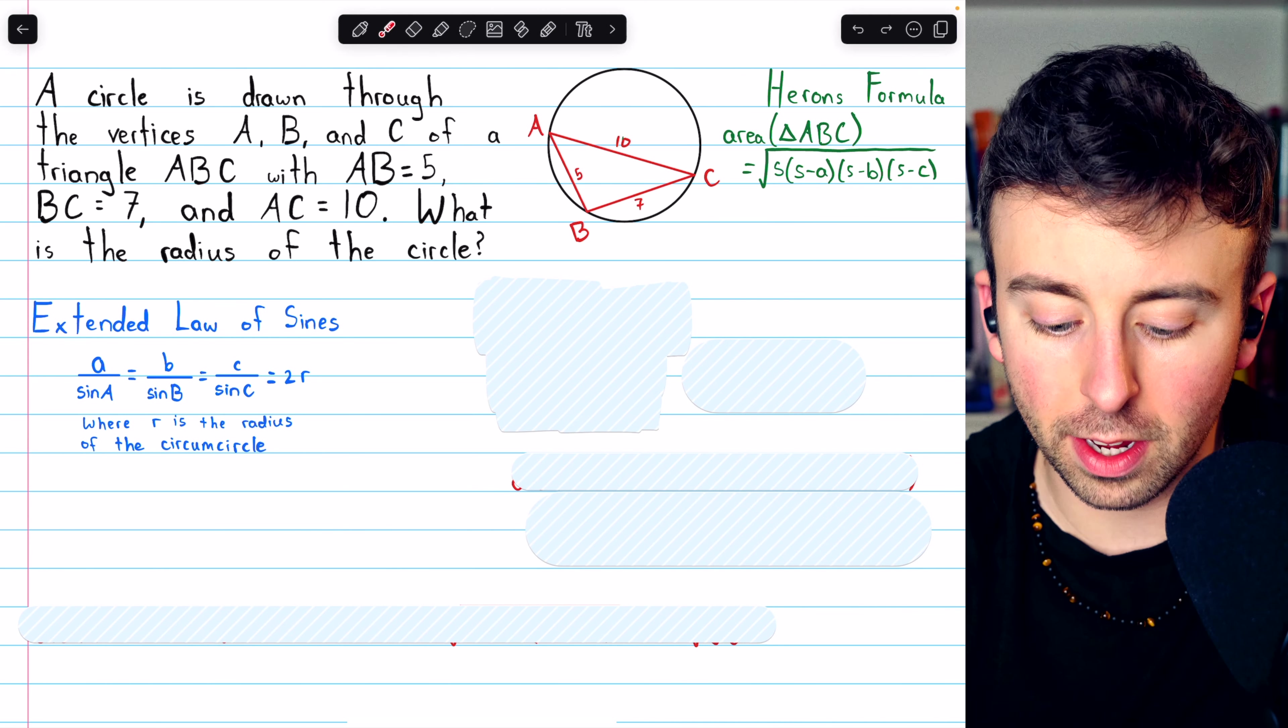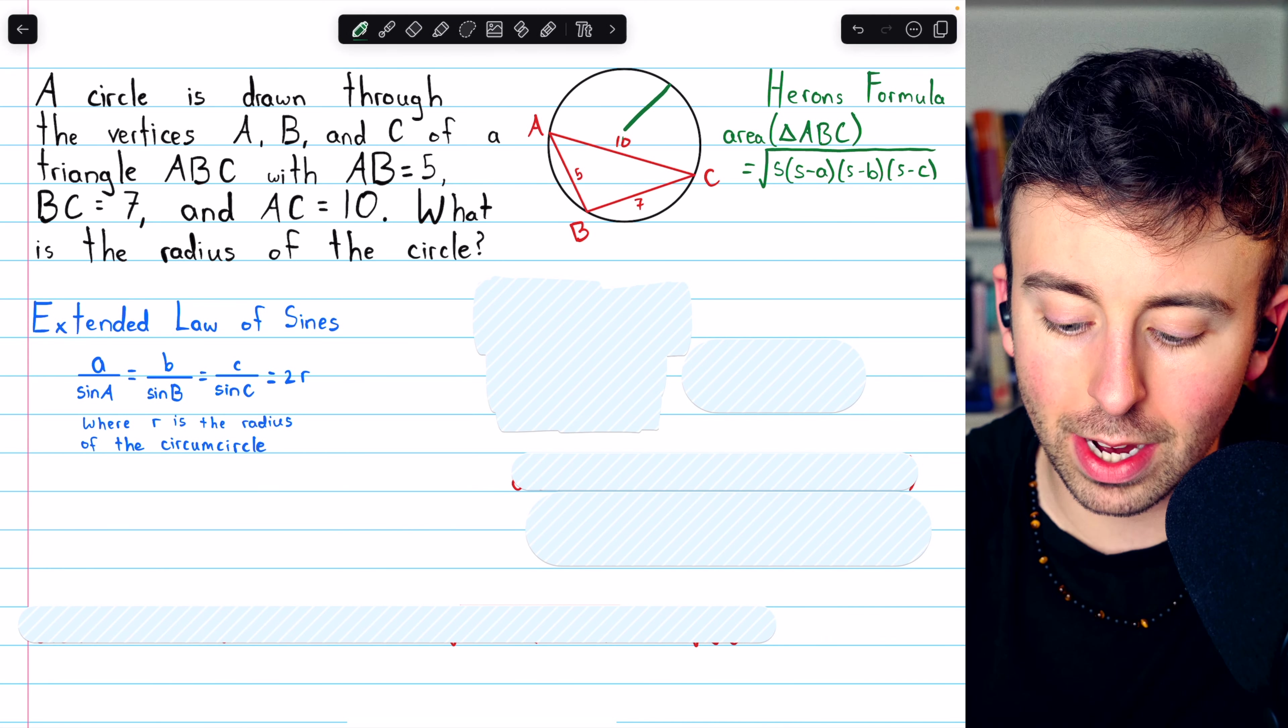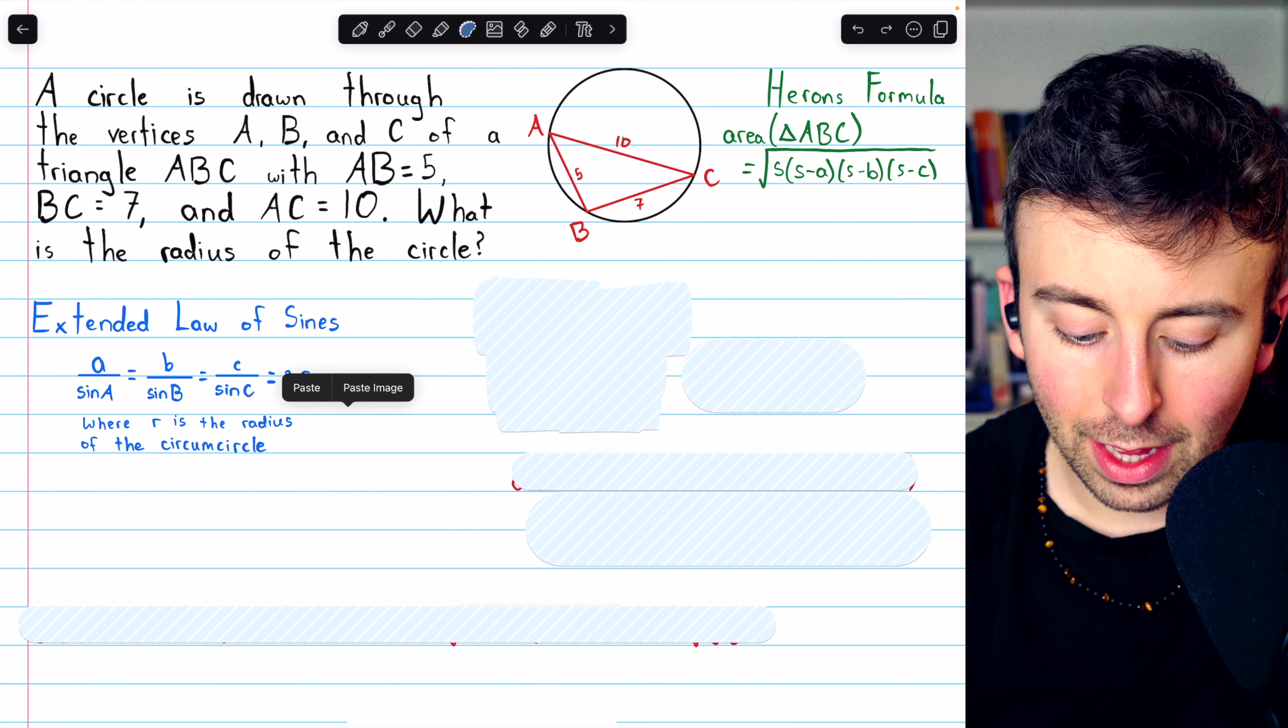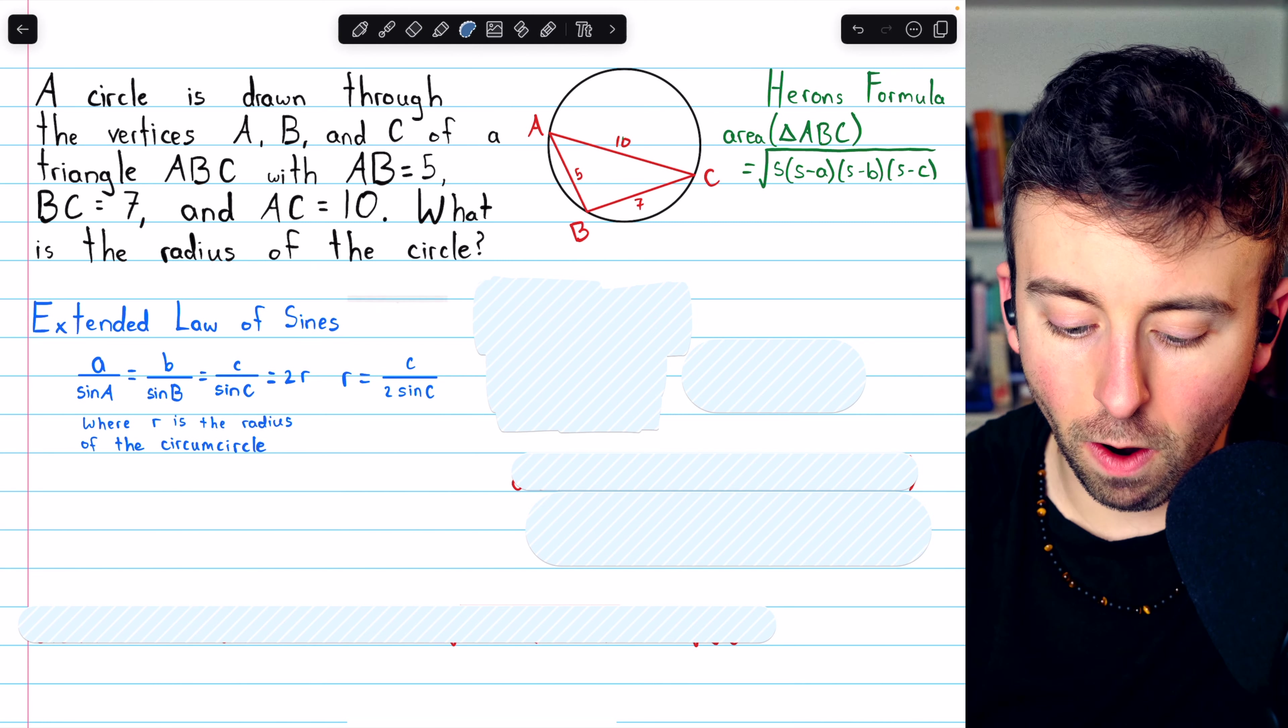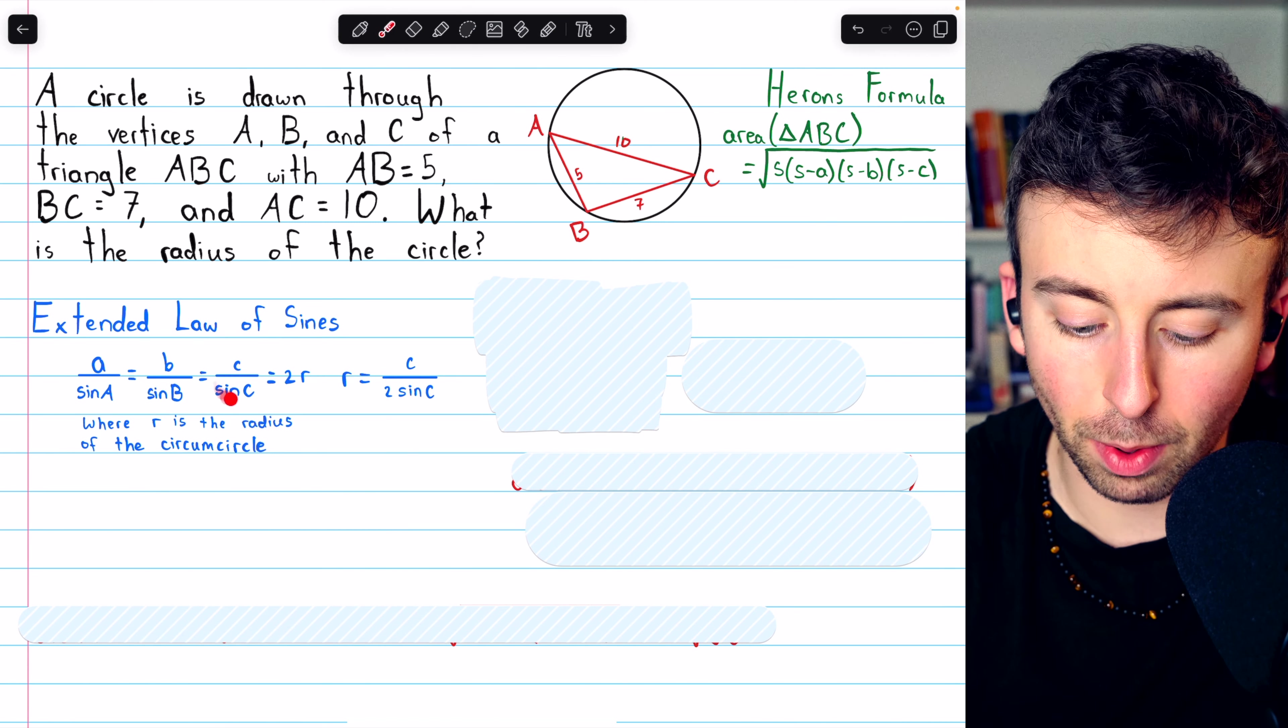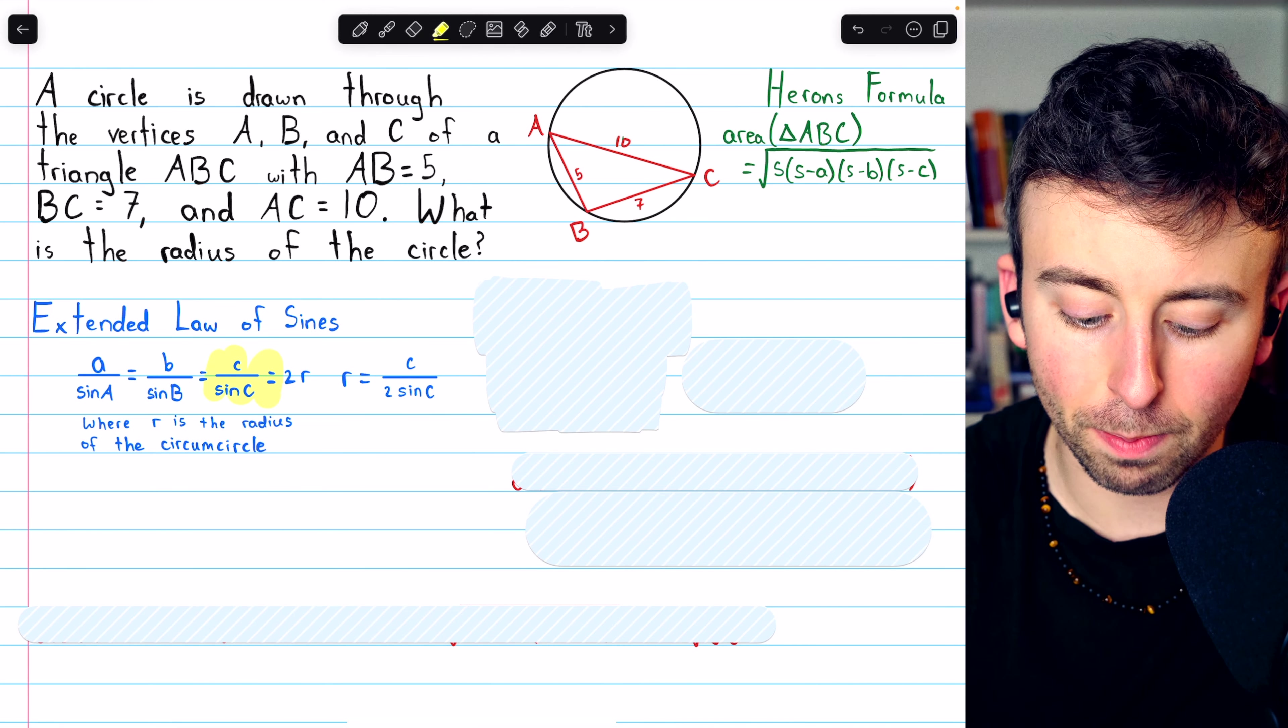Because remember, the end goal here is to find R, the radius of the circumcircle. So let's just go ahead and solve that for R. That's going to give us R equals C over 2 sine C, just dividing both sides of that equation by 2.